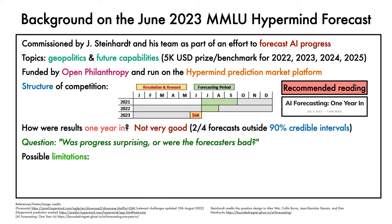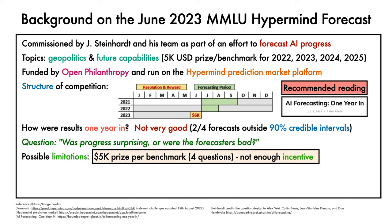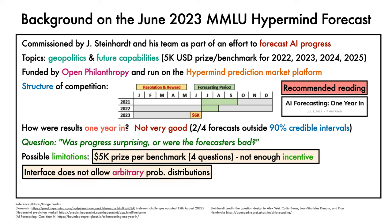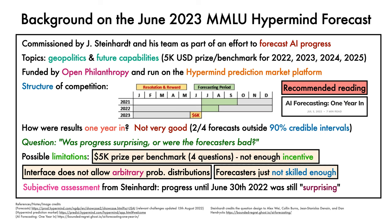Several possible limitations were identified as to why the forecasters could have fared poorly. First, the prize of US$5,000 per benchmark, which is split over four questions and divided amongst the forecasters, may not have provided enough incentive to invest time in making good predictions. Second, the HyperMind interface does not allow for providing arbitrary probability distributions as predictions, which may have affected the forecast. Third, it's possible that the forecasters were just not skilled enough — perhaps the best ones didn't compete, or the forecasts were too unusual compared to traditional forecasts on the platform, which generally target themes like geopolitics. The subjective assessment from Steinhardt was that progress in the first year of the competition up until June 30th, 2022 was still surprising, even when accounting for these concerns. He highlights how both his own informal predictions and those of other professional forecasters on other benchmarks did not fare much better than those of the HyperMind forecasters.